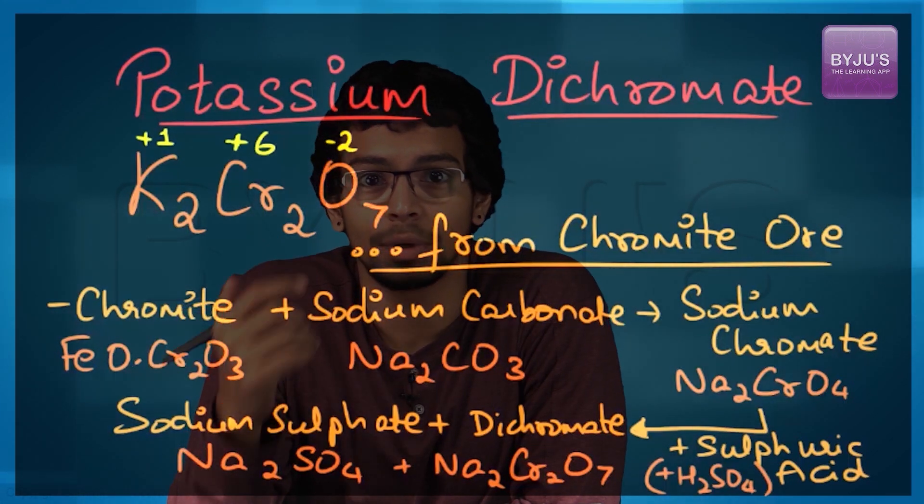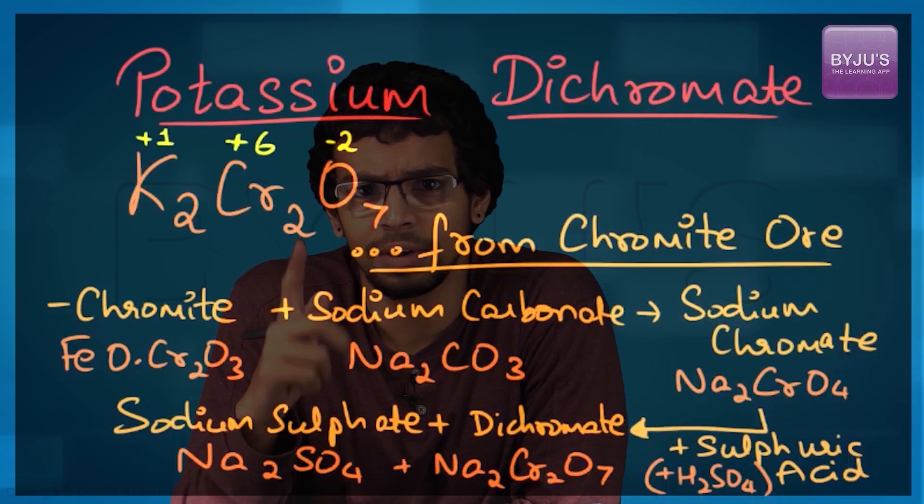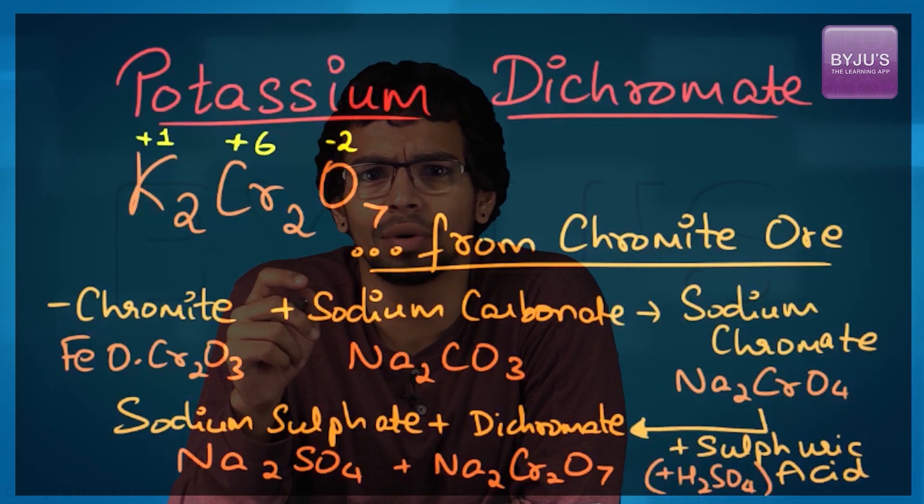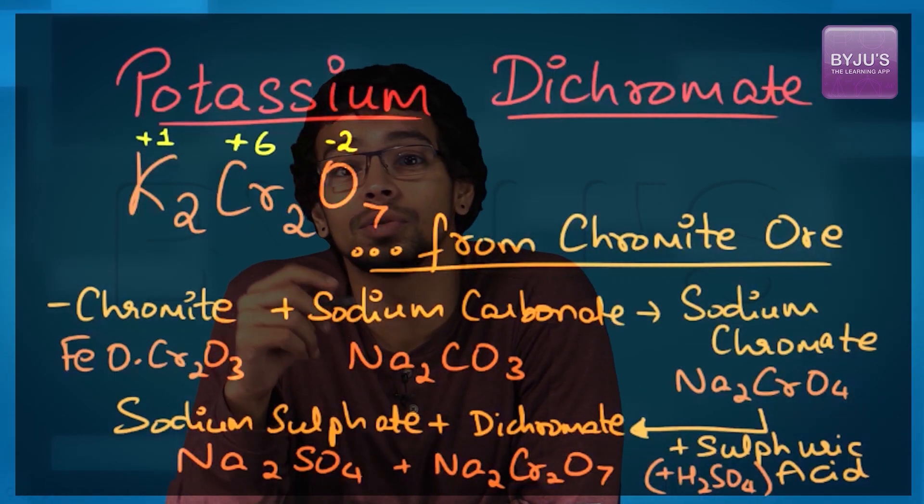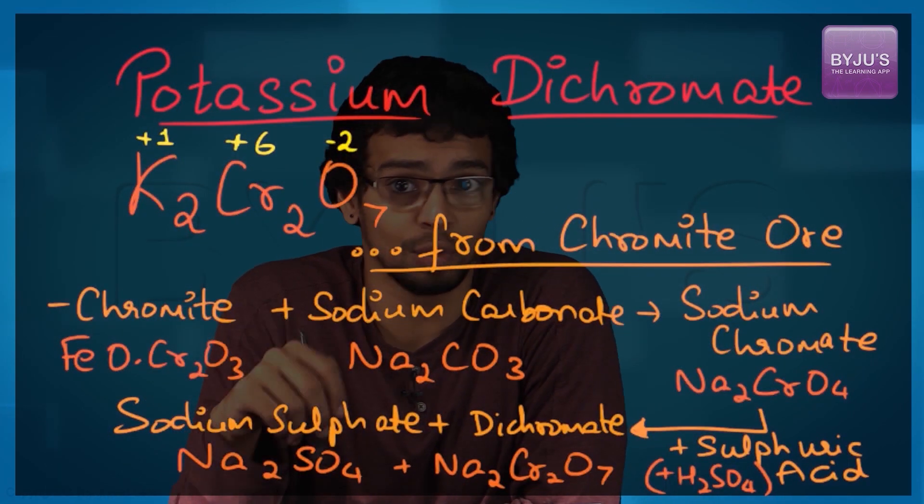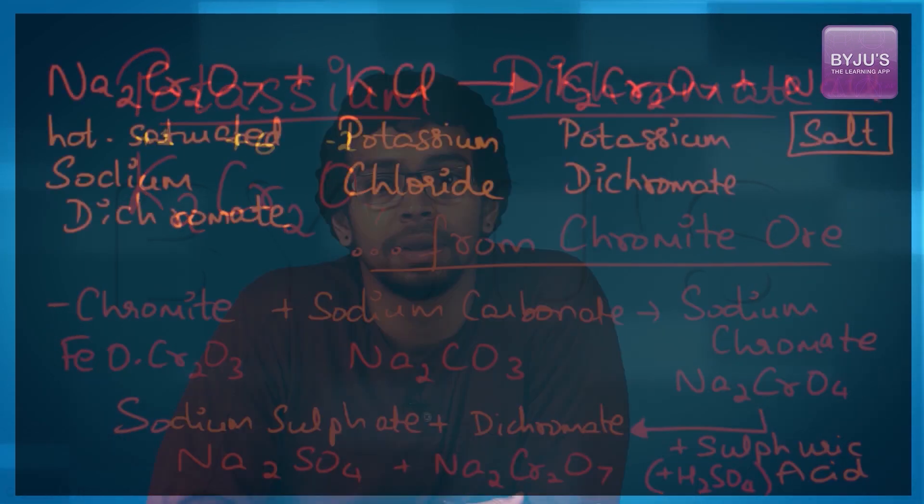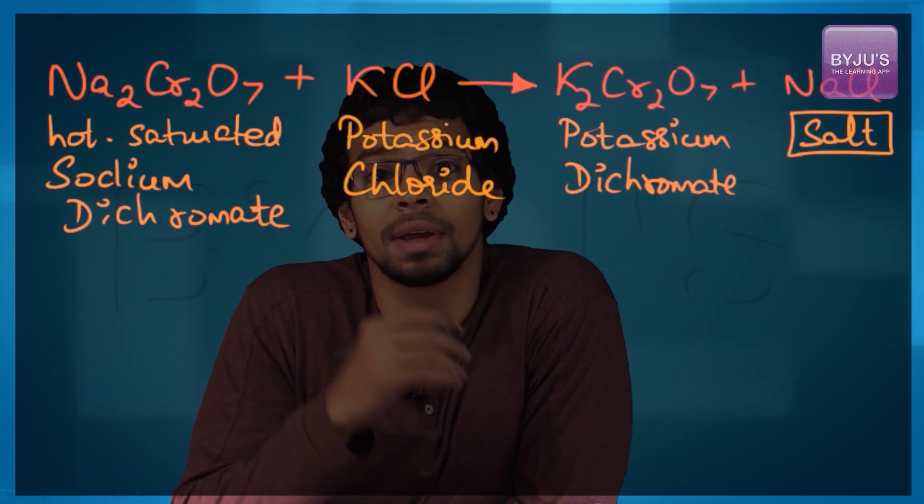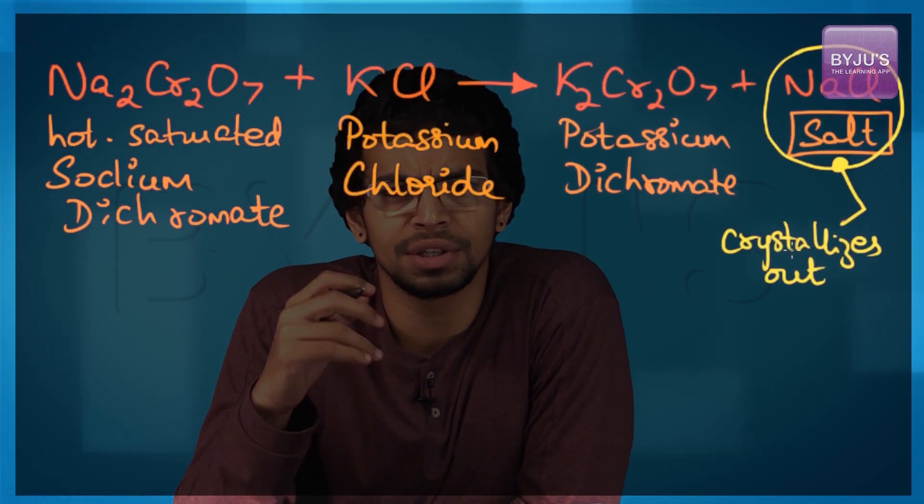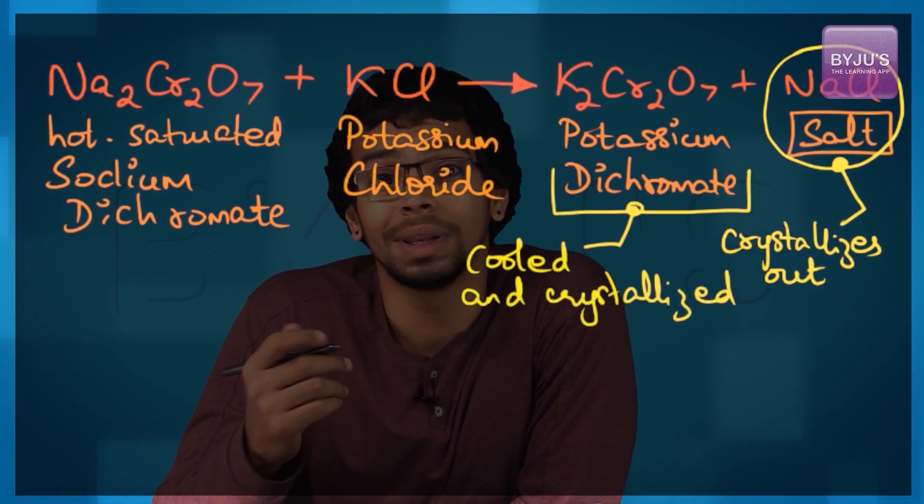Potassium dichromate is generally formed from chromite ore directly. The chromite ore can be converted to sodium chromate, which can further be treated with sulfuric acid to form sodium dichromate. This reaction produces common salt which can be precipitated out of the hot solution. Potassium dichromate on cooling can be derived as crystals.